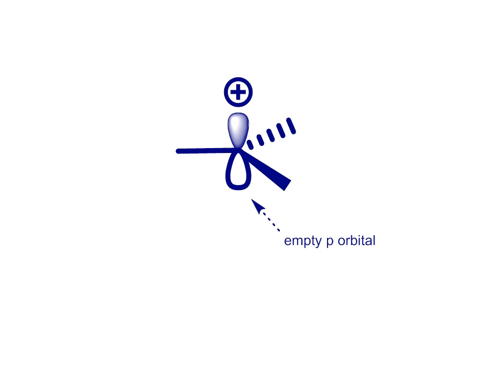Carbocations are planar. The theory of valence-shell electron pair repulsion tells us that the three bonds will orient themselves as far from each other as possible, which in a trigonal system is to the corners of a triangle, with bond angles of 120 degrees. The carbocation is most usefully thought of as an sp2 hybridised centre, with an empty P orbital on that central carbon.